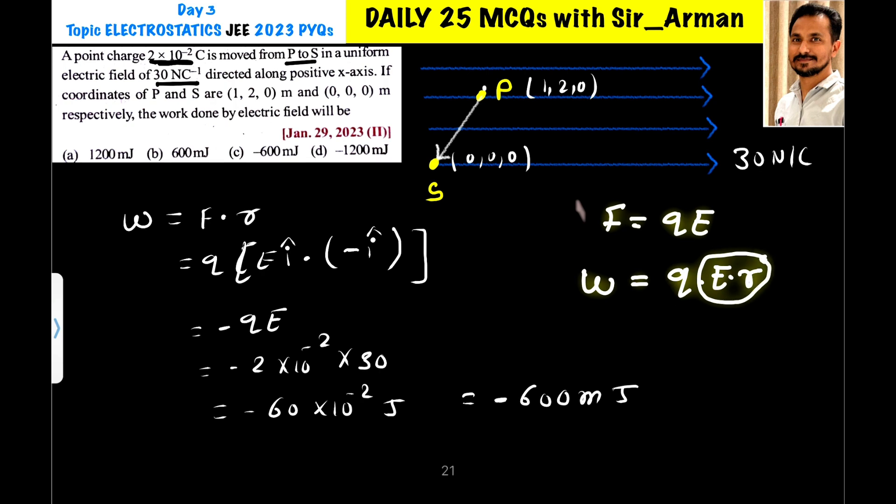Now the particle is displaced from point P to point S. So our initial position is P and final position is S. The displacement is final position minus initial position, that is S minus P.